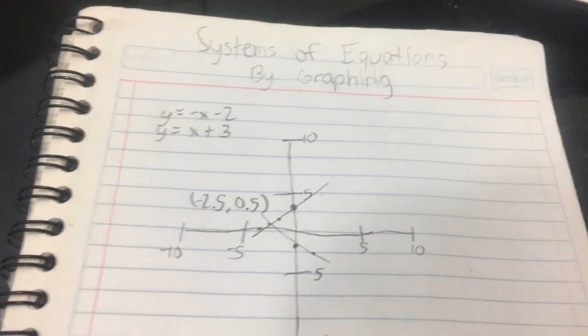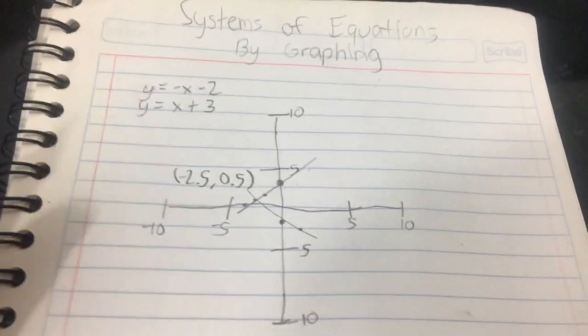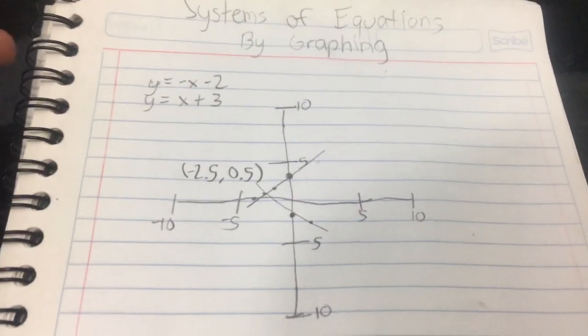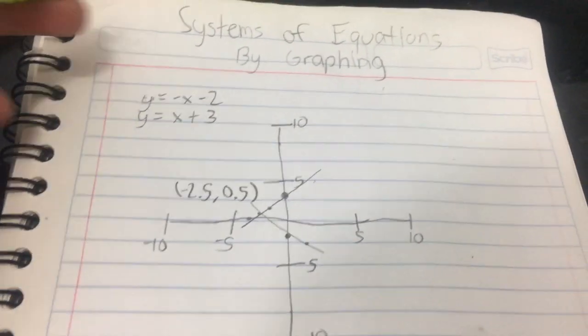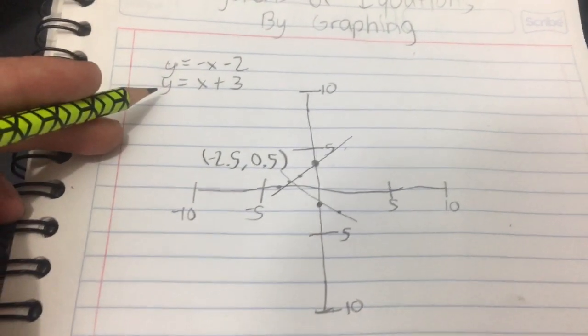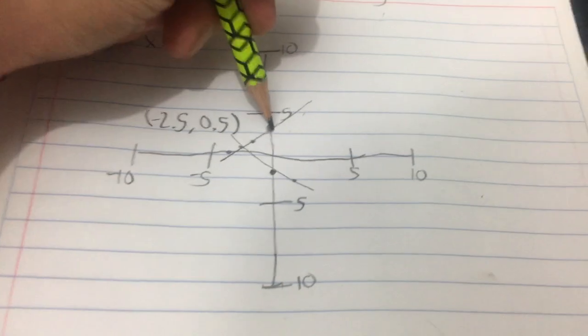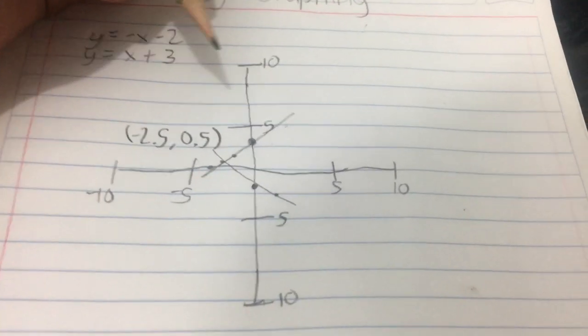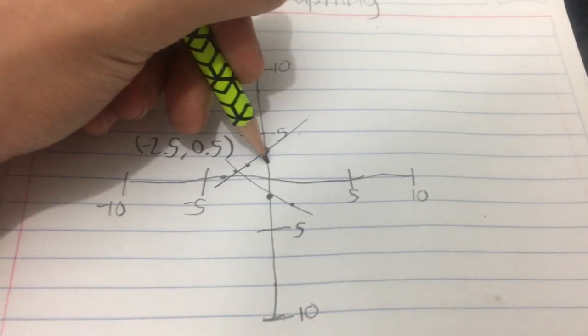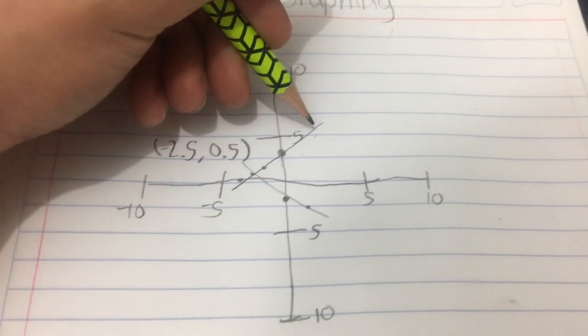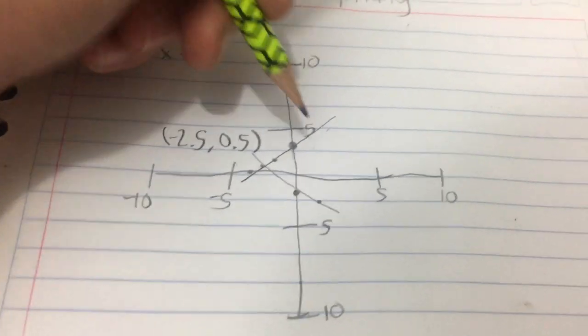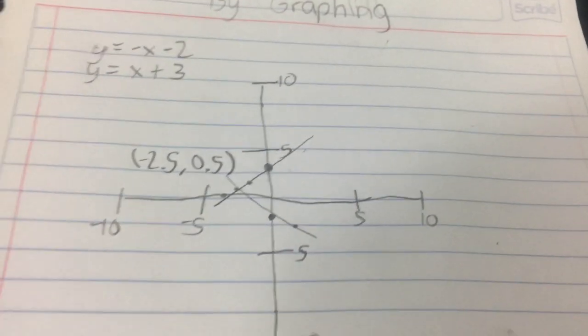So another good example of solving systems of equations by graphing is simply by putting the slope and the y-intercept of each problem. Example, we have y equals x plus 3. So we are just going to plot the point, which is 0, 3. And then the slope is 1. So we can just go down 1, left 1, or up 1, right 1. It would be the same thing as we would end up still with a diagonal line.